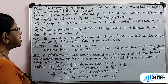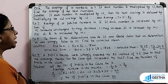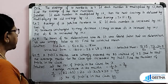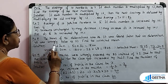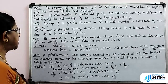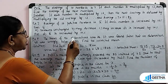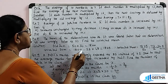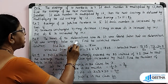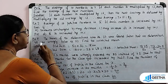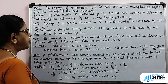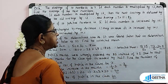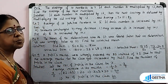Exercise number 8: The mean of 50 observations was 36. It was found later that an observation 48 was wrongly taken as 23. Find the corrected mean. The original sum equals 50 into 36 equals 1800. Corrected sum equals 1800 minus 23 plus 48, that is 1825. Therefore, the corrected mean equals 1825 by 50, which is 36.5.